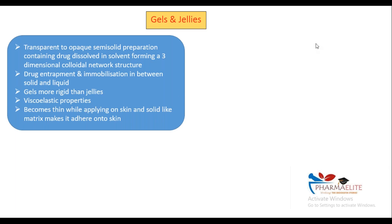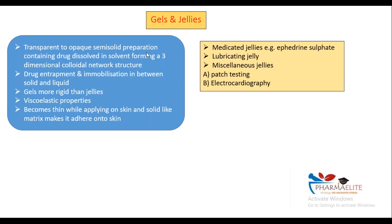You might remember gels and jellies are used in ECG (electrocardiogram) — jellies are applied before placing electrodes. In jellies, you have different types. You have medicated jellies — don't forget the examples; medicated jellies include epidural sulfate. Lubricating jellies are the one used for lubrication. Miscellaneous jellies include your patch testing. When it comes to transdermal patches, they also include gel in some different types of formulations, along with electrocardiography.